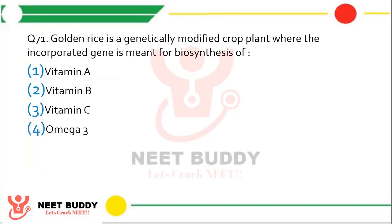Question number 71: Golden rice is a genetically modified crop plant where the incorporated gene is meant for biosynthesis of — Option A: Vitamin A. Option B: Vitamin B. Option C: Vitamin C. Option D: Omega 3. The correct answer is option A, Vitamin A.